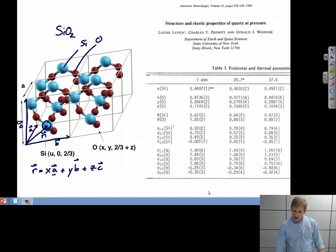So in this case, A, B, and C are our principal lattice vectors. X, Y, and Z are the fractional coordinates. So how much of lattice vector A? How much of lattice vector B? How much of lattice vector C do we need to add together to get the position of this particular atom?